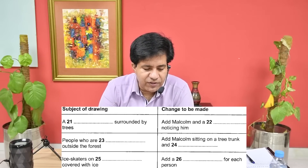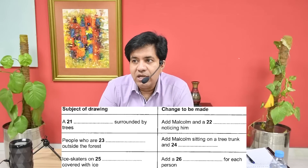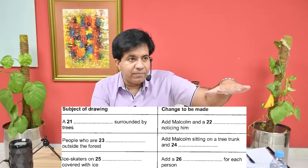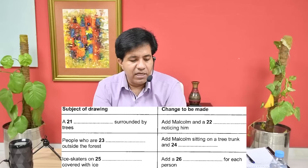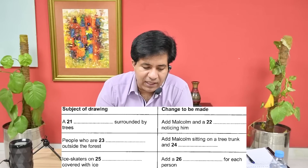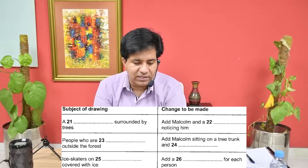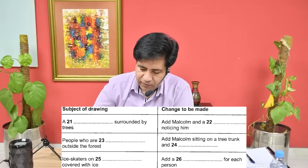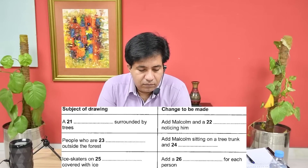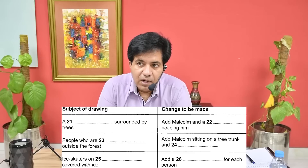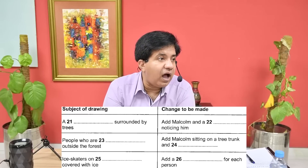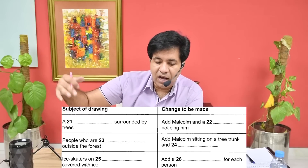Question 25: ice skaters on dash, covered with ice. Ice skaters on something, and that thing is covered with ice — ice cannot be the answer because it's already there. Then there's the drawing of people ice skating in the forest. They're supposed to be skating on grass, aren't they? That's right, and it's frozen over — covered with ice. So grass, and it's frozen over means the grass is covered with ice. Answer is 'grass.'